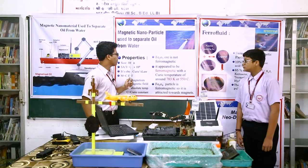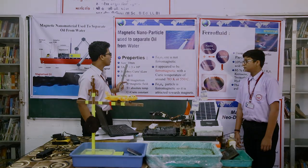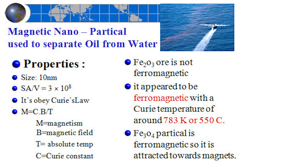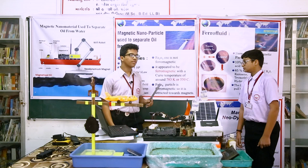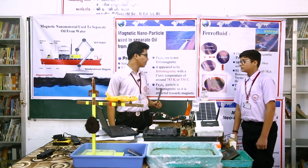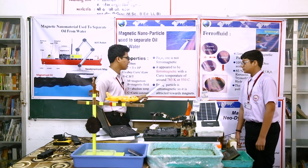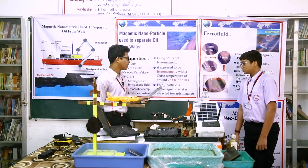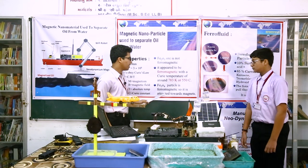These are the properties of ferromagnetic particles: the diameter is only 10 nanometers, and they occupy a higher surface area because their surface-area-to-volume ratio is higher. To obtain these nanoparticles, hematite is heated at 550 degrees Celsius with bonding materials nickel and chromium, and it is reduced in carbon. So we obtain Fe3O4 particles which are ferromagnetic and are attracted toward the magnet.